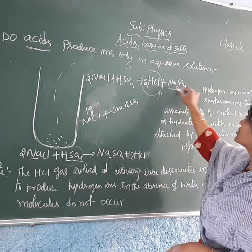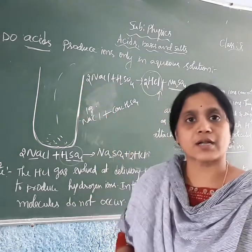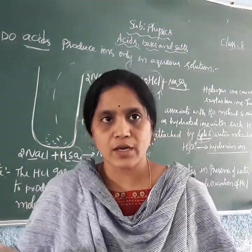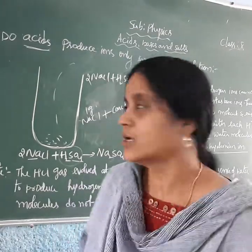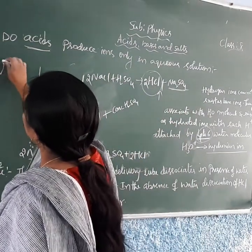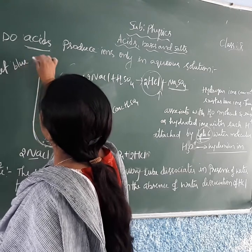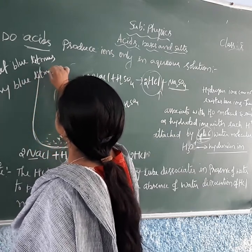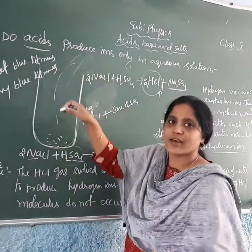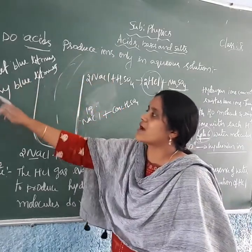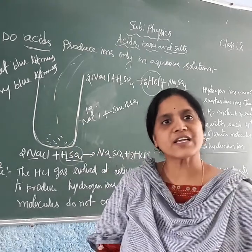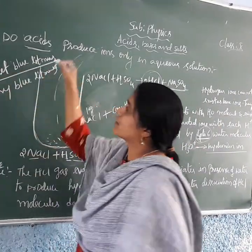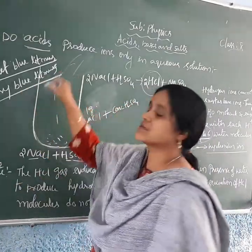Along with that, we get an aqueous solution of sodium sulfate. When the HCl gas is evolving, take two litmus papers. Acids can be tested with blue litmus paper — in the presence of acid, blue litmus changes to red. Take one wet blue litmus paper and one dry blue litmus paper, and place both where the gases are evolving. Observe which litmus paper changes color.